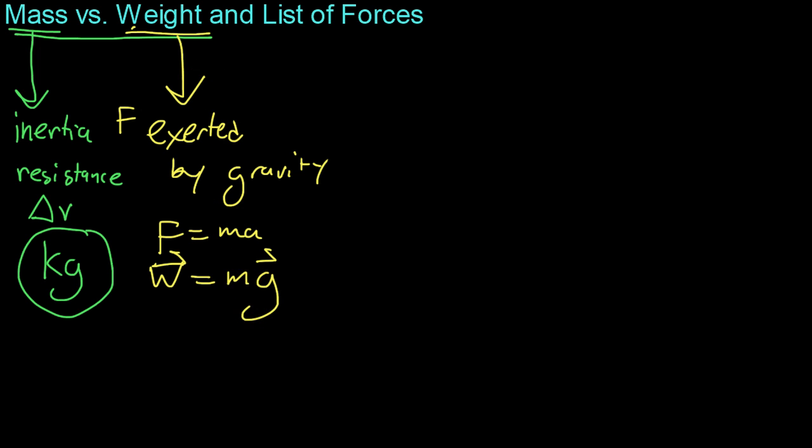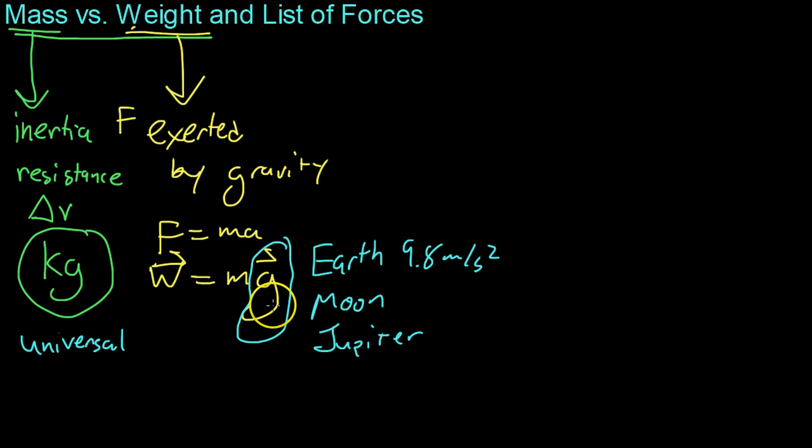And so, your mass is sort of a universal measurement. You're going to have the same mass on the Moon as you will on Earth, as you will on Mars. However, weight will change with this constant g. So, on Earth, you're going to have your 9.8 meters per second squared. On the Moon, it'll be something different. On Jupiter, it'll be something extreme. Basically, your weight will change as you go from different gravitational fields from one to the next, but your mass will not.